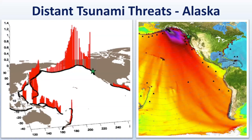As a distant source tsunami threat, our greatest risk really is from Alaska. They have many events — as many as 82 observed tsunamis since 1788. The higher the red bar on the chart, the higher the potential wave heights hitting Washington coastline. The darker color on the map signifies more intense currents and potentially higher wave energy hitting Washington State, fanning out to less intense waves in other areas of the Pacific Ocean. From an Alaska event — our worst case distant source event — waves could arrive in less than four hours.